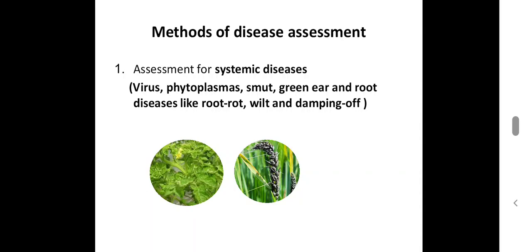Methods of disease assessment. First, that is the assessment. It is for the systemic disease. Systemic disease in which the infection spreads throughout the plant. So, the systemic disease examples. That is virus, phytoplasmal disease, smut, green ear.